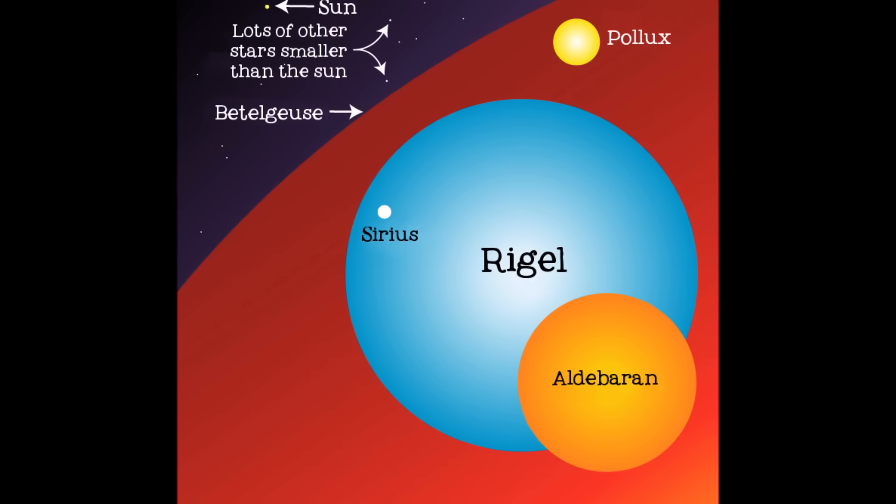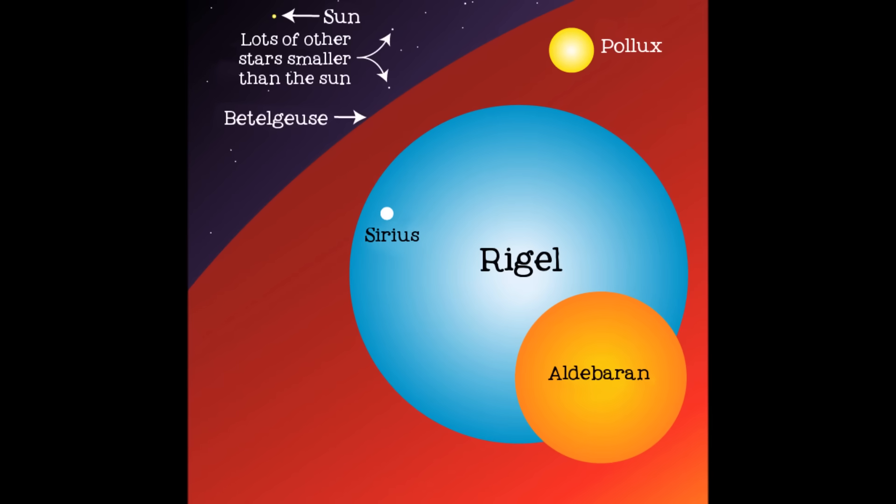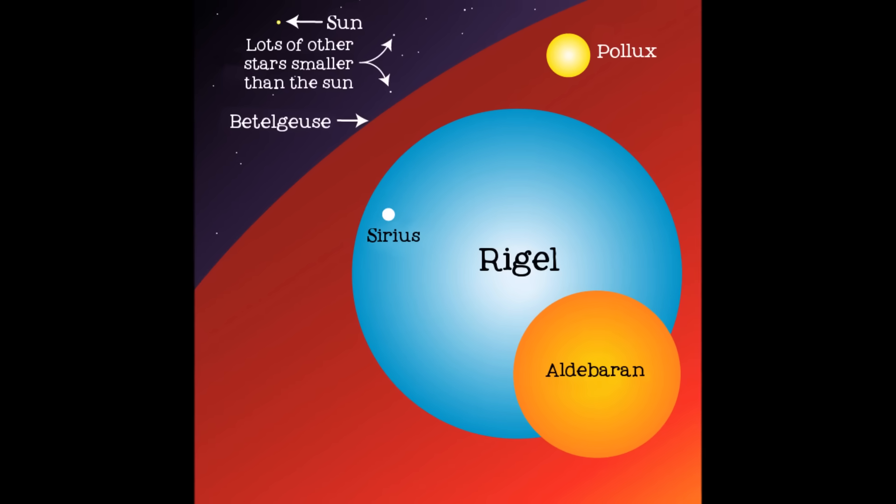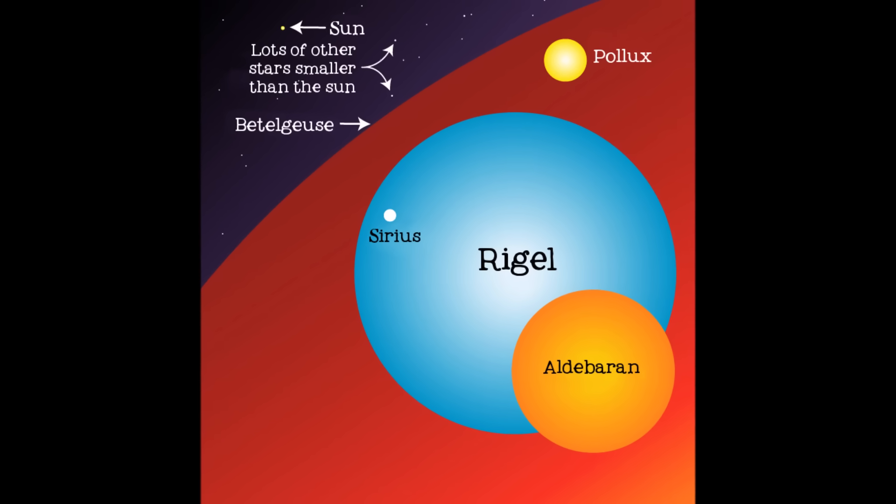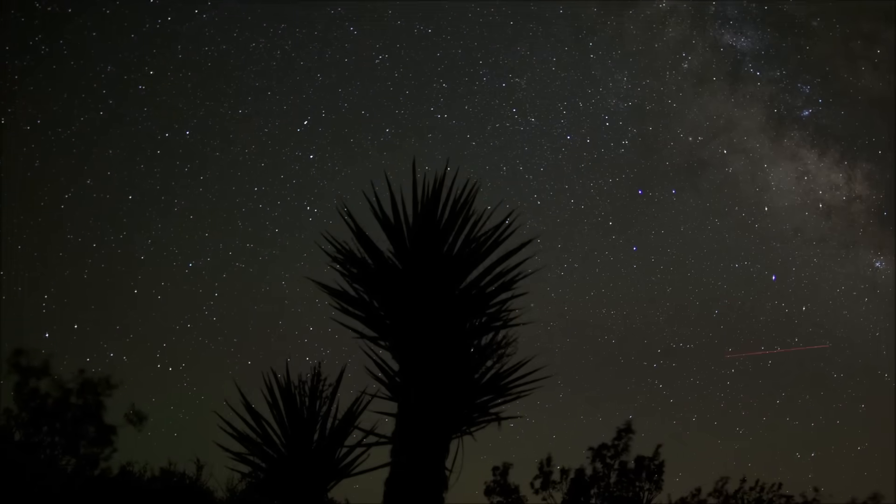As far as stars go, however, the sun is average or even small in size. It is called a yellow dwarf, and there are billions of stars like it in the Milky Way.